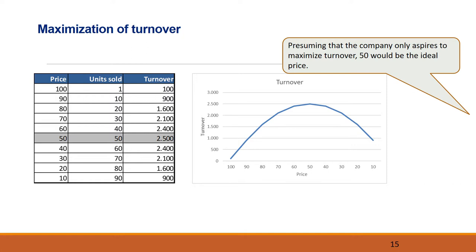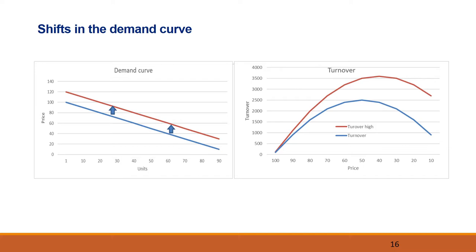The consequences of a reduction in competition — for instance, due to two companies entering into a price cartel or because of a merger — may be illustrated by a shift in the demand curve. The illustrated shift from the blue to the red demand curve indicates that consumers have become willing to pay more for the product. That is, their reservation price has increased. This could be because the prices of substitutable products have increased, or because there are no substitutable products being sold in the market anymore.